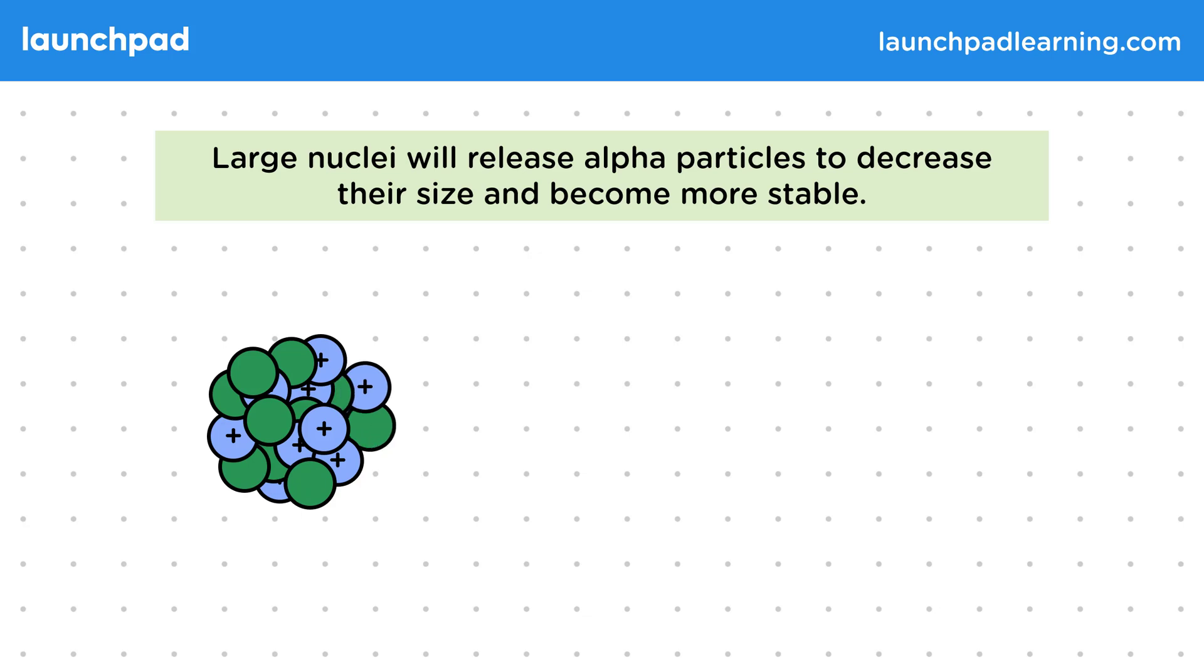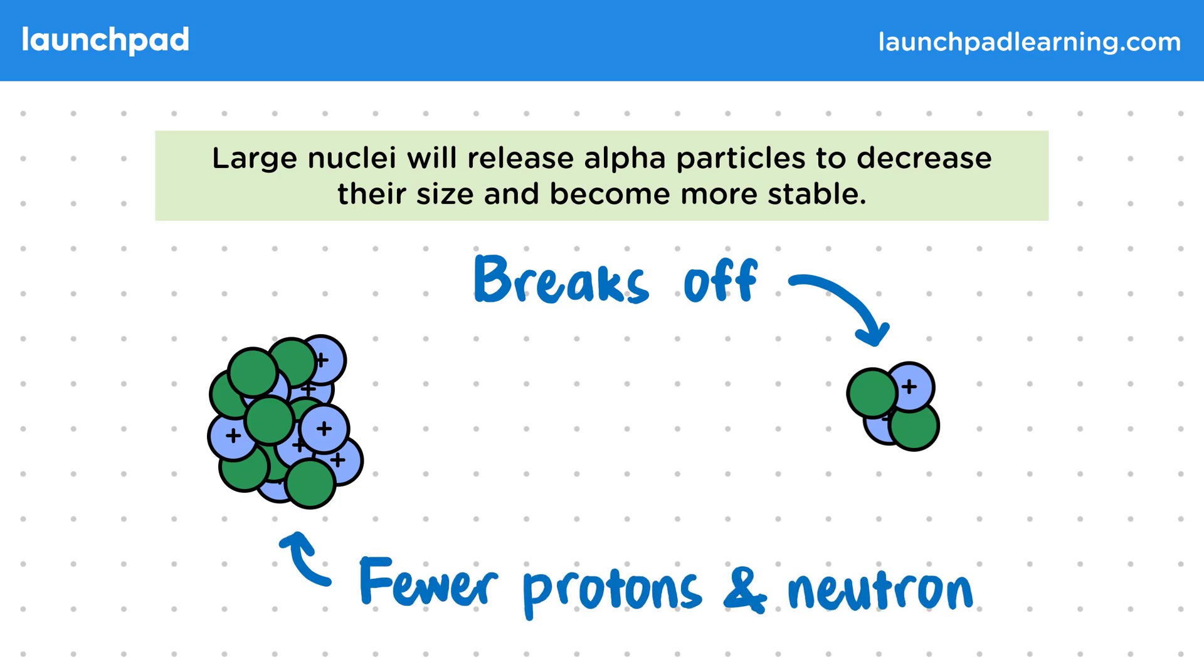So in the large nucleus, the alpha particle forms when some of the protons and neutrons break off, because they can't be held by the nucleus anymore. Since there are now fewer protons and neutrons in this nucleus, it will be more stable. Though there may need to be more decays before it becomes completely stable.